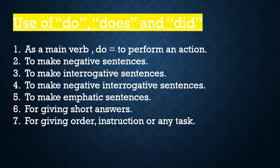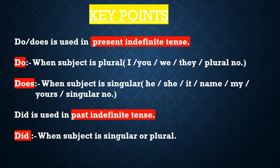Fourth use is to make negative interrogative sentences. Do, does and did is used to convert present and past indefinite sentences into negative interrogative sentences. Fifth use is to convert affirmative sentences into emphatic sentences. Sixth use is for giving short answers — if anybody asks any question, you can answer shortly with the help of do, does and did. Seventh use is for giving orders, instructions, or any task or request. You can use do and did. Remember, does is not used here.